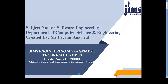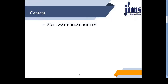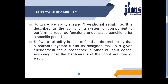Good morning students. Next lecture is Software Reliability. Firstly we will understand the meaning of the term Software Reliability. Software Reliability means Operational Reliability. It is described as the ability of a system or component to perform its required function under static condition for a specified period.